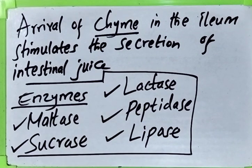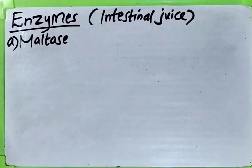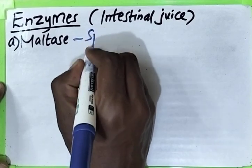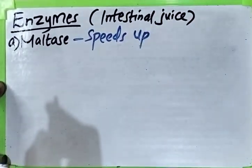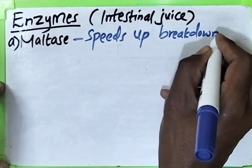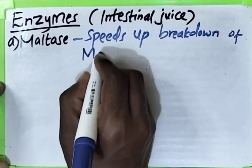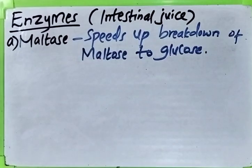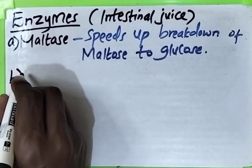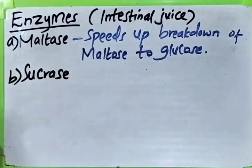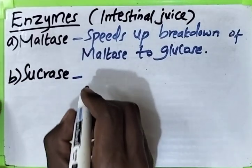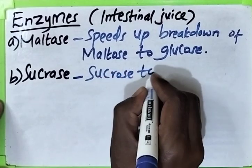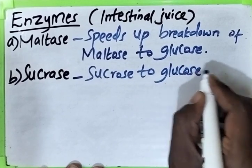Let us look at each enzyme and give its function or substrate. Maltase speeds up the breakdown of maltose to glucose. Sucrase speeds up the digestion or breakdown of sucrose to two glucose and fructose.